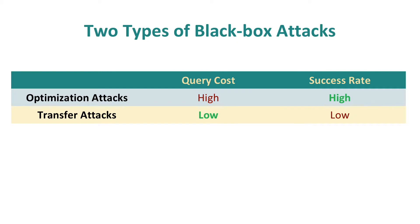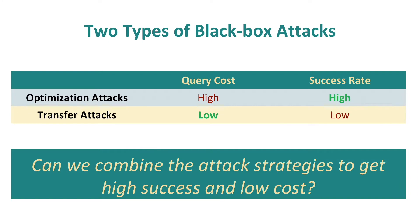Existing black box attacks can be categorized into optimization-based and transfer-based attacks. Optimization attacks are highly successful, but also have high cost. Transfer attacks have low cost, but also have low success rate. So the question is, can we combine the two attacks to get high success and low cost?